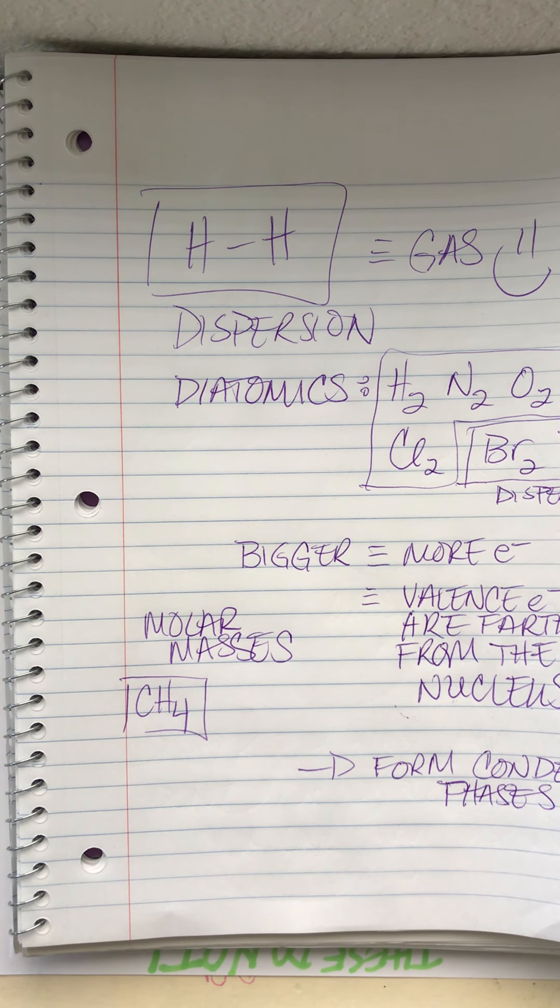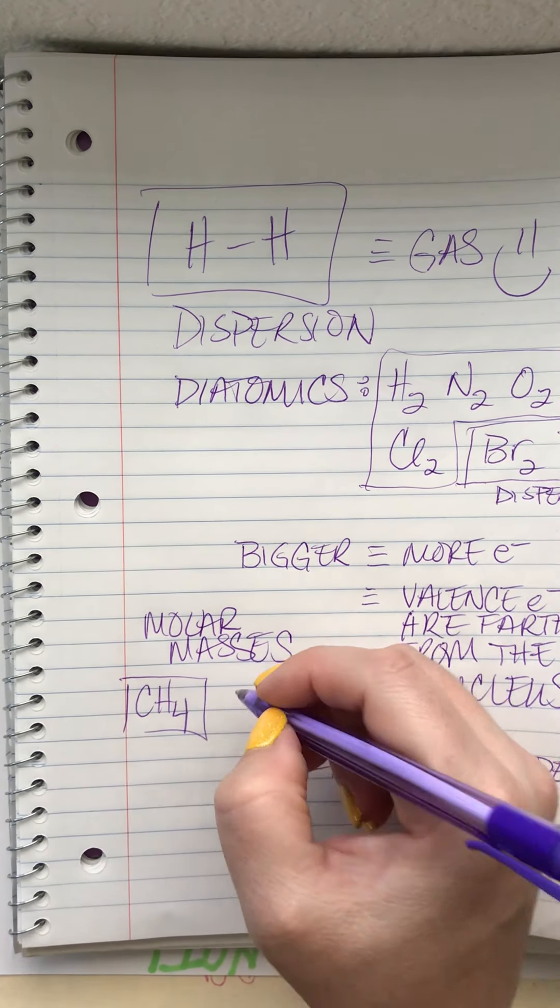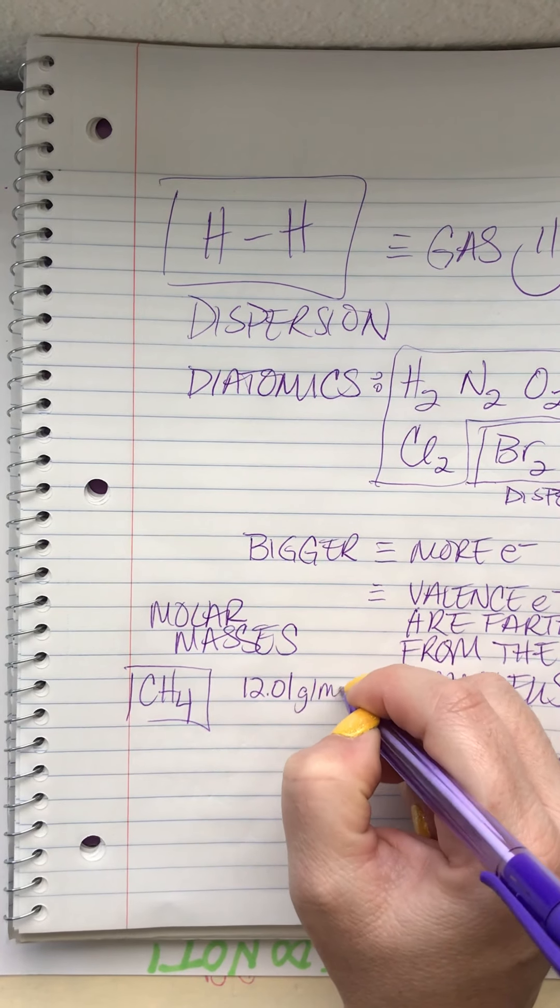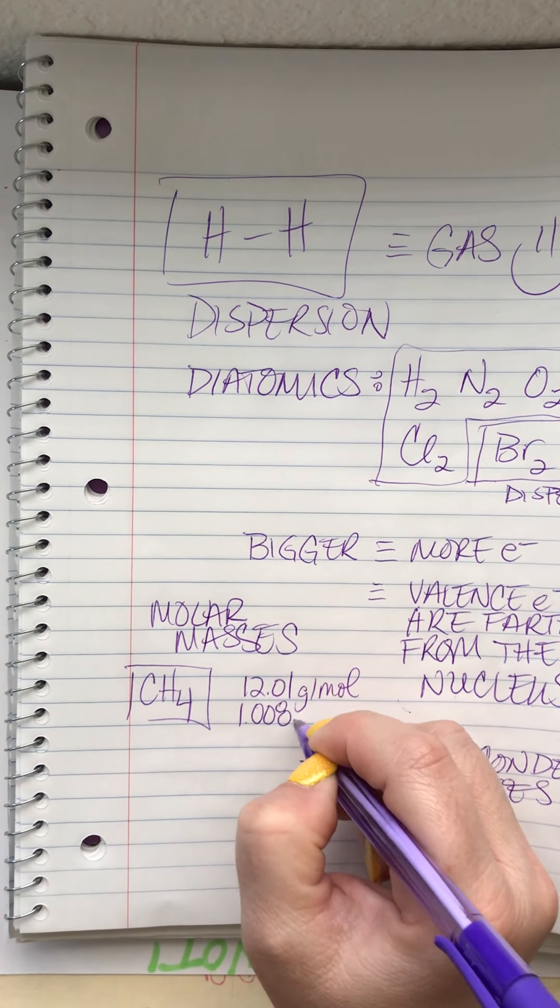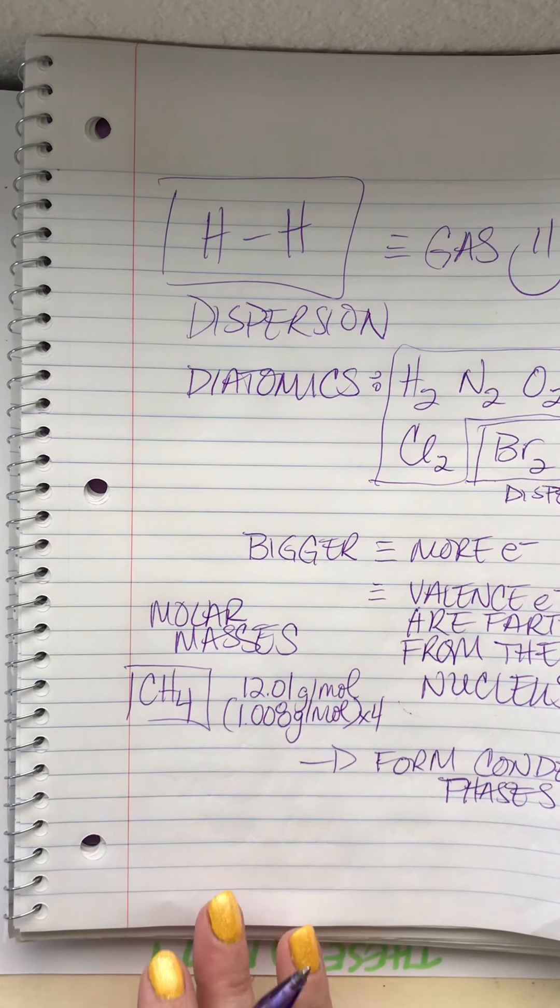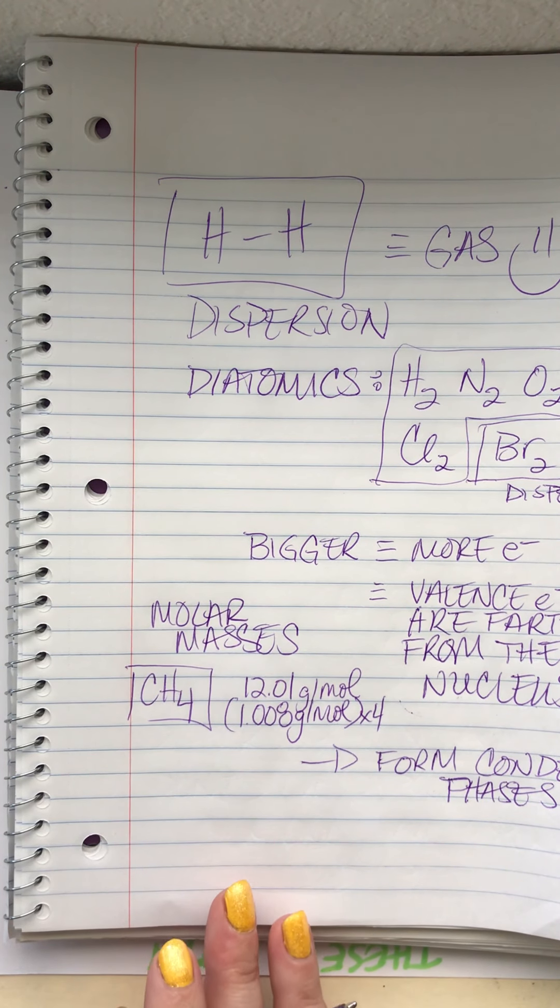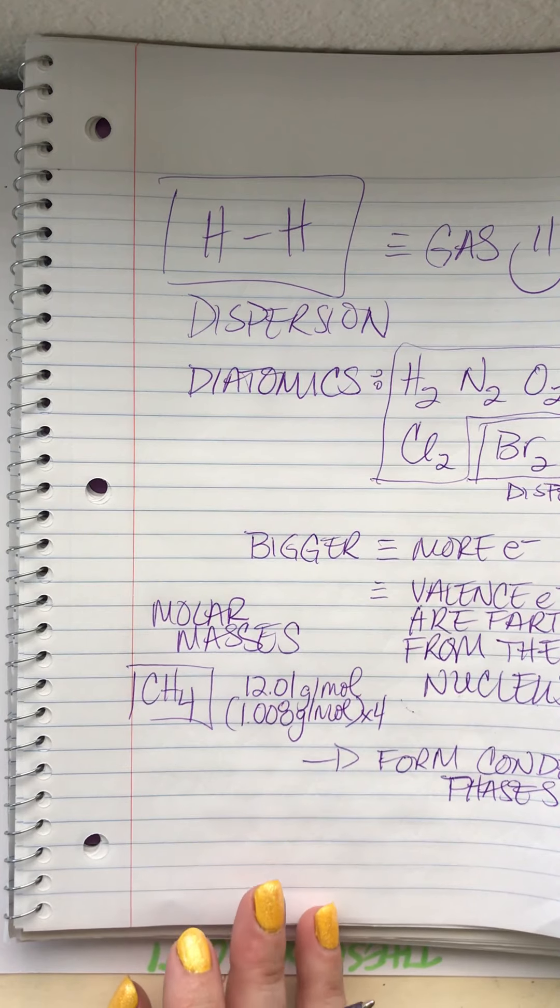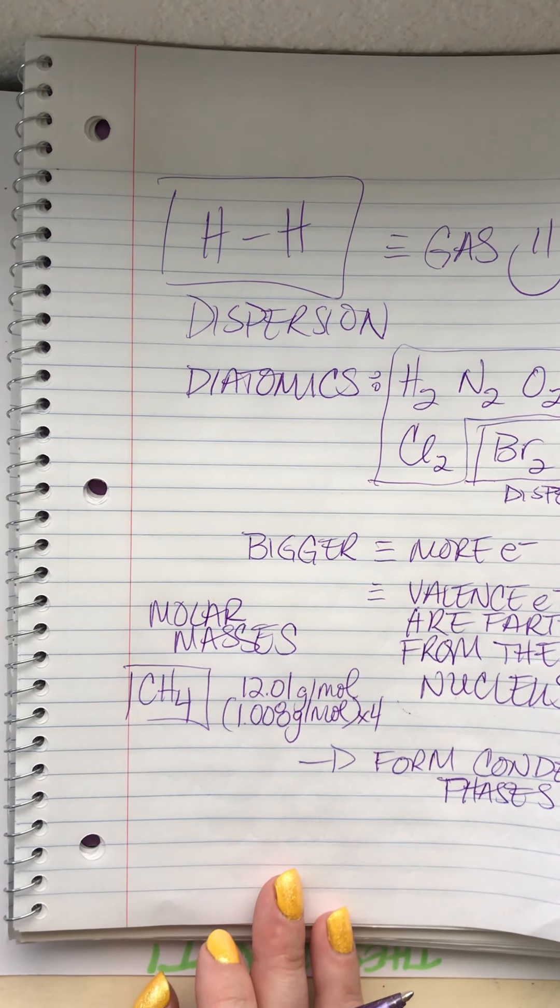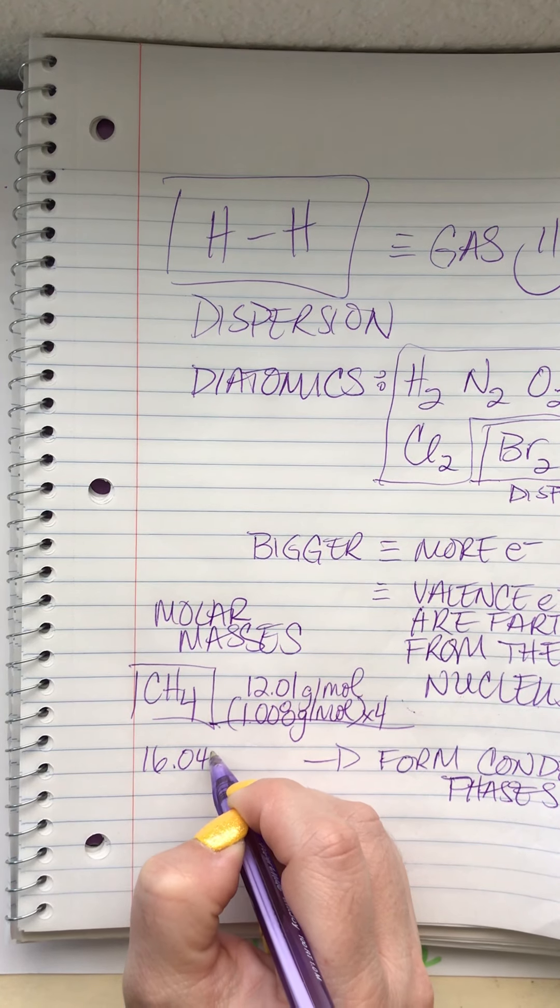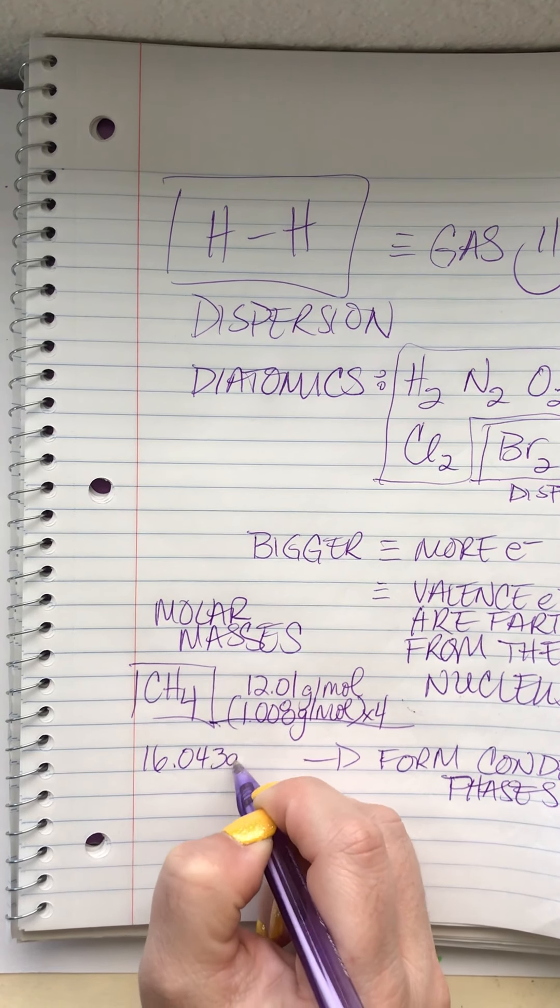Okay, so anyways, molar masses. This guy, carbon, has a molar mass of 12.01 grams per mole, and hydrogen, 1.08 times four. Yeah, baby, did you memorize these now? Yeah, these are the idiotic things that my brain remembers. I don't know how to spell words that I could spell five seconds ago, but I can't forget the molar masses of elements. So our overall molar mass for this guy, I think, is 16.043.